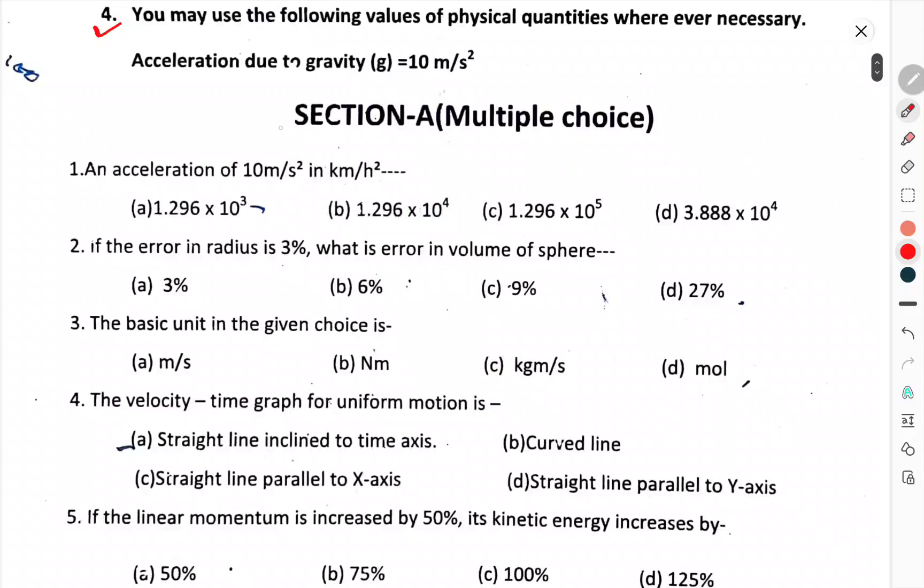Section A, multiple-choice questions. An acceleration is 10 meter per second square in kilometer per hour square. Okay, correct option, you have to choose. In this paper, we will talk about the answers. So, let's start.